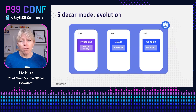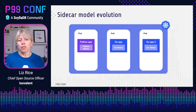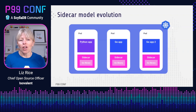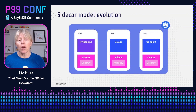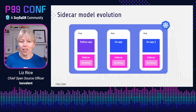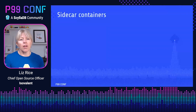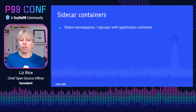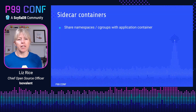As we moved to containerization and the Cloud Native model, it became possible to separate out that common functionality into separate containers that all our apps could use, regardless of what language they're written in. In Kubernetes, we run those instrumentation containers alongside our apps by injecting them into each pod. That container is called the sidecar container, and this is called the sidecar model.